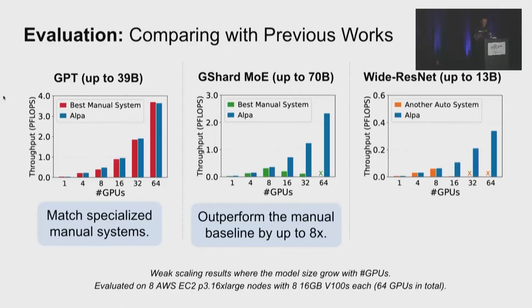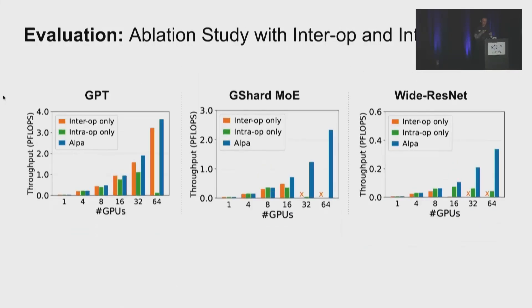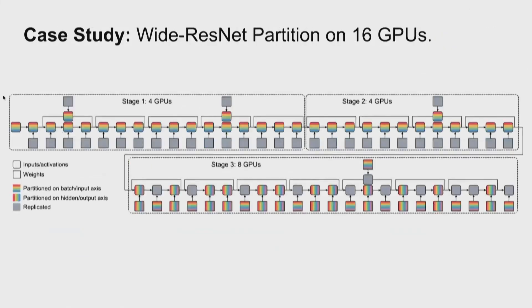And for Wide-ResNet, which is a significantly different model compared to transformers, it is a convolutional neural network. And there is no existing manual model parallel strategy for it. We show that we can generalize to the models without manual plans while others fail. We also use Alpa to perform inter-operator or intra-operator only as a baseline. We show that combining inter and intra-operator parallelism can scale to more devices. And here we also show a case study of the parallelism strategy we find for Wide-ResNet on 16 GPUs. As you can see, this is a pretty complicated plan, and it's really hard even for an expert to design.